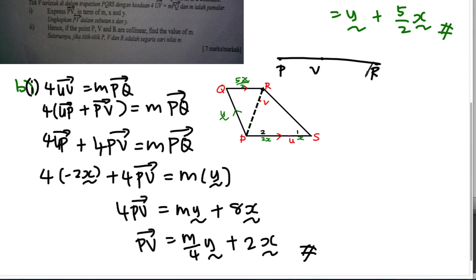The comparing method here is very important. Whenever they say collinear or parallel, you can always use this formula — just make sure you use all three points (P, V, and R) in the vector equation. Thanks for watching — post any questions in the comments on YouTube or Facebook.